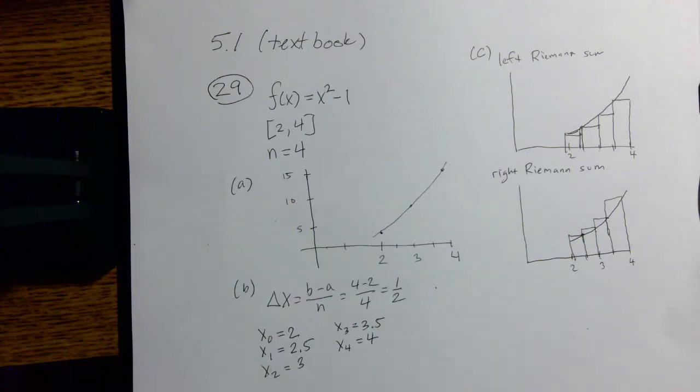It also asks us for what we call grid points. The grid points tell us where each sub-interval starts and stops. So when you have four sub-intervals you're going to have five grid points, and they're spaced half a unit apart in this example.